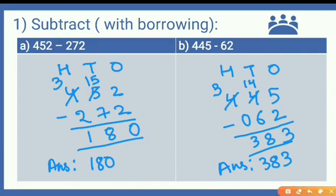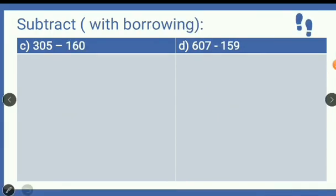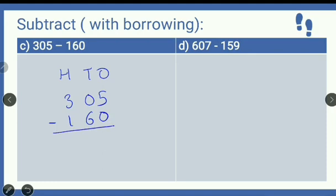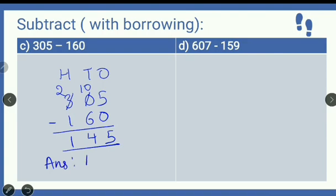Let's practice a few more questions. Arrange 305 minus 160 in column. In the ones place, 5 minus 0 is 5. In the tens place, is it possible to subtract 6 from 0? No. So 0 borrows from the hundreds place: 3 reduces to 2 and 0 becomes 10. Ten minus 6 is 4. In the hundreds place, 2 minus 1 is 1. So the answer is 145.